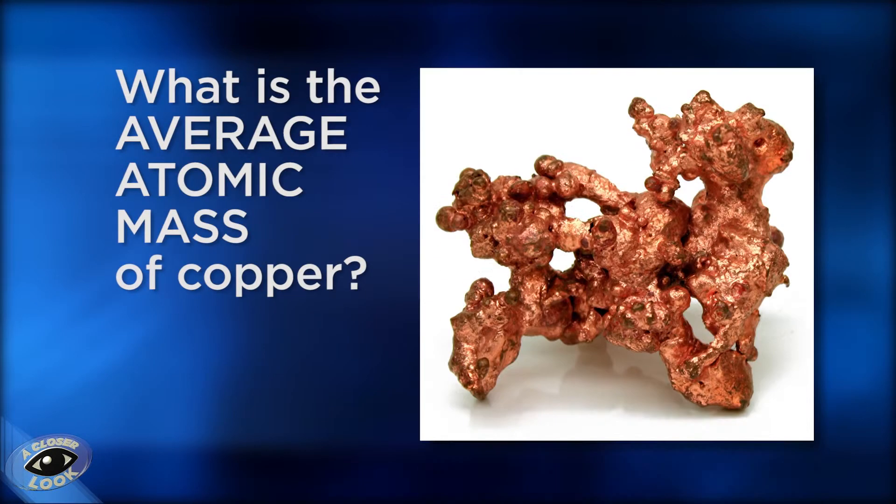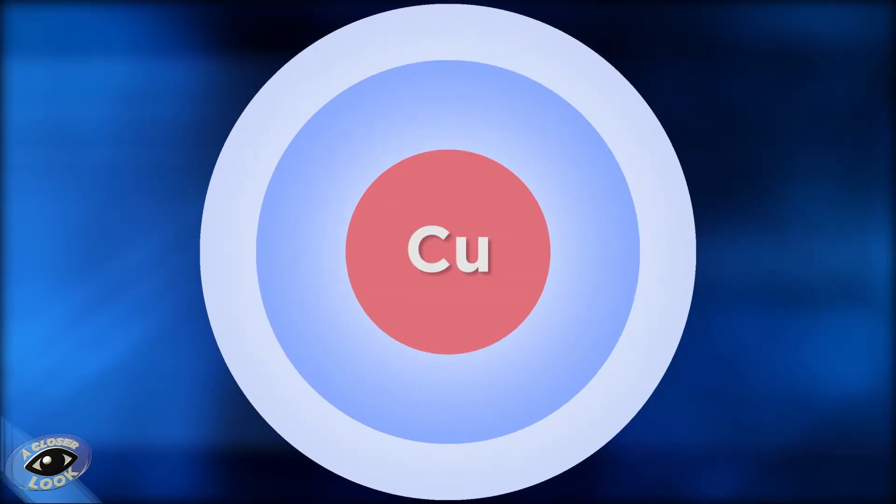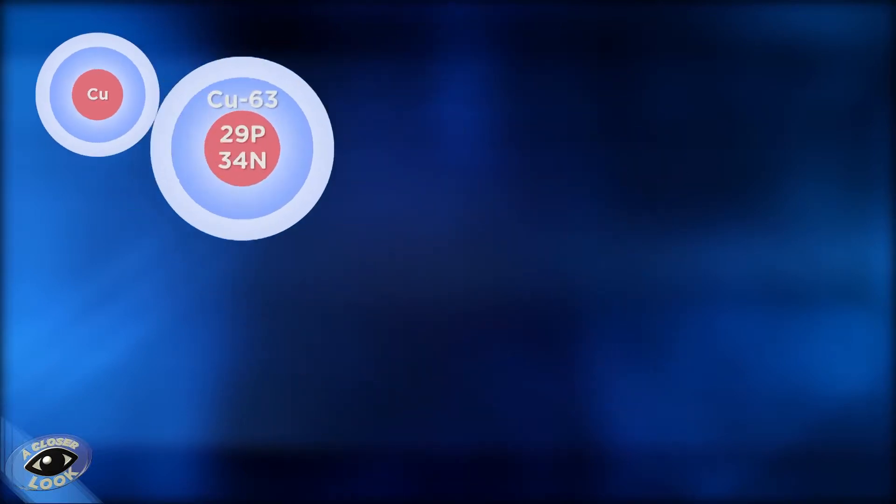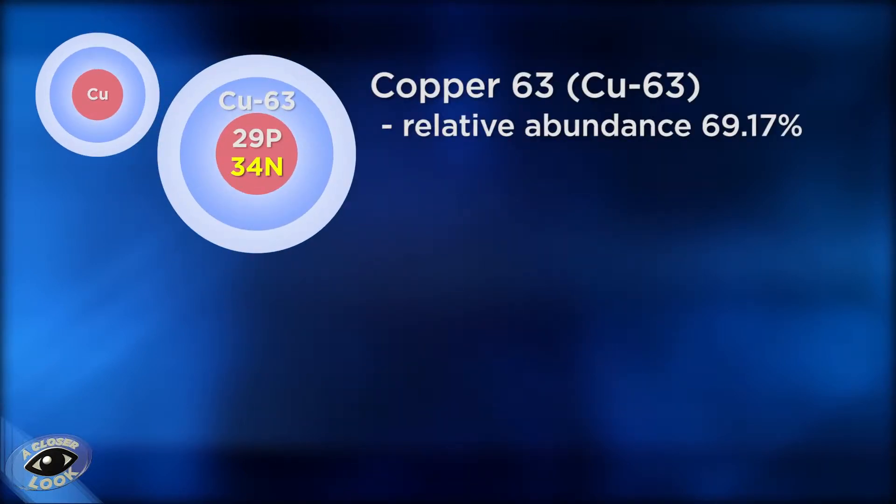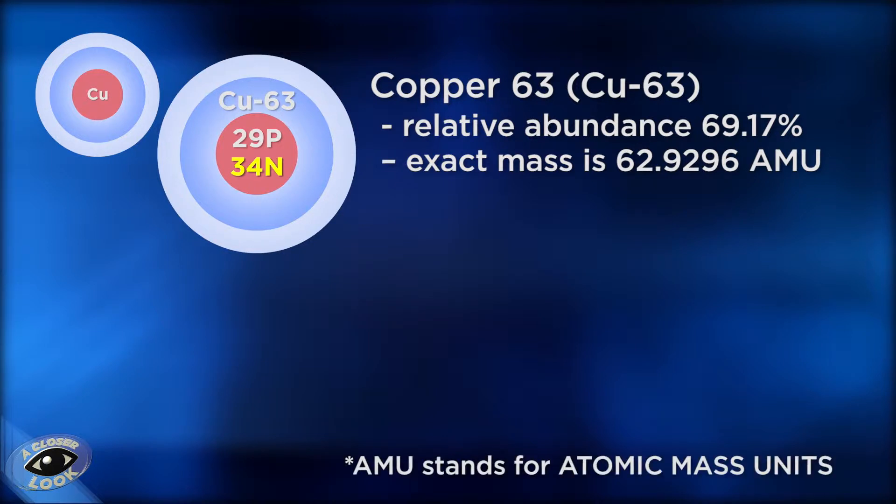In our first practice problem, let's calculate the average atomic mass of copper. We know that copper has two isotopes. First is copper-63. Of all of the copper in the world, 69.17% is copper-63. And that mass number is rounded up from the more accurate figure of 62.9296 AMU, or atomic mass units.